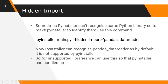Sometimes PyInstaller can't recognize some Python libraries, so to make PyInstaller identify them, use the hidden import feature. As we saw previously, by default PyInstaller can recognize NumPy, PyQt5, and PySide2. But there is another library — pandas-datareader — which is not recognized by PyInstaller by default. So to tell PyInstaller that we have used pandas-datareader in our code, we have to use: pyinstaller main.py --hidden-import=pandas_datareader. This tells PyInstaller to also import that library.